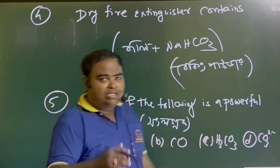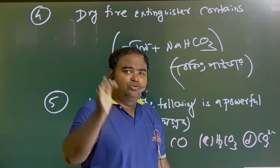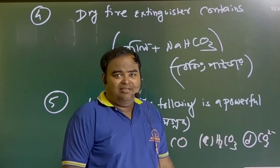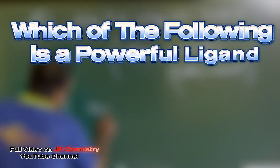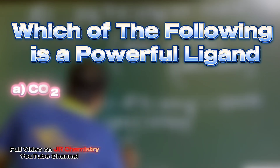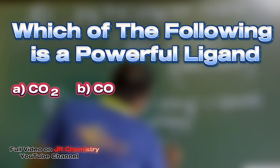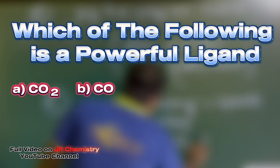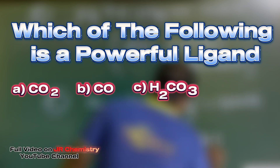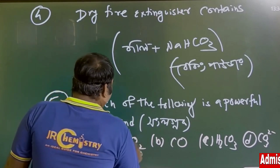There was a question — if you look at the options, you can see the options that you have been given. Which of the following is a powerful ligand? The options are: CO₂, carbon monoxide, H₂CO₃ (carbonic acid), and the last option is CO₃⁻.